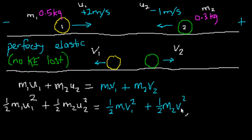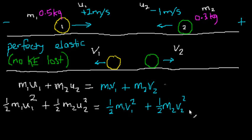Now we have two equations and still two unknowns, v1 and v2. With two equations, we can now solve for these two unknowns. However, the moment we try to solve for them, the algebra can be a little bit tricky.